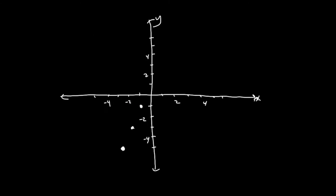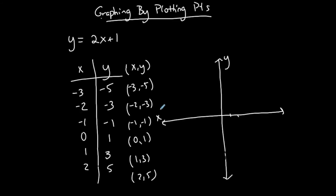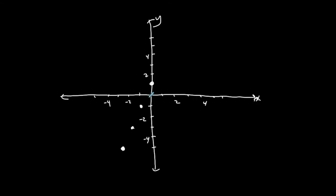0, 1. I go 0 units in the x direction and then 1 unit in the y direction. This is a special point. I want to talk about it after I graph this. 1, 3. 1 unit in the x direction. 3 in the y and the positive y. And I want you to see as I graph these, notice what's happening. They're creating a line.